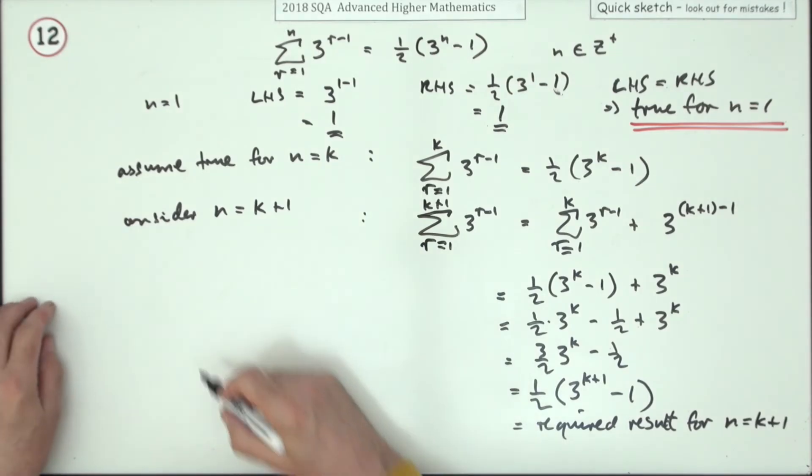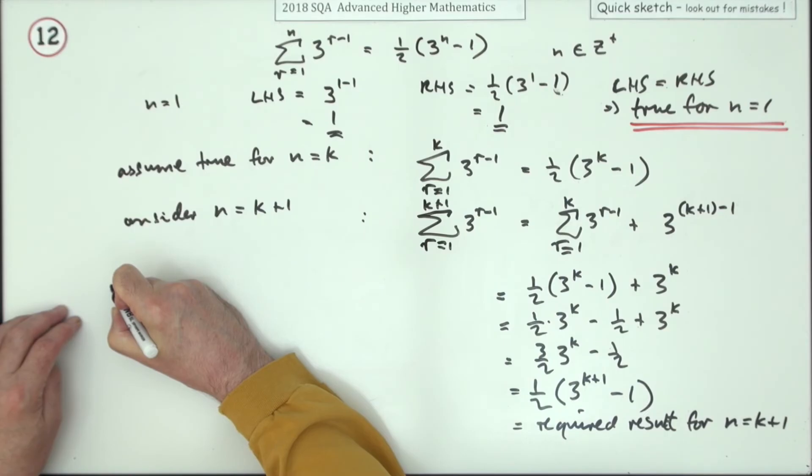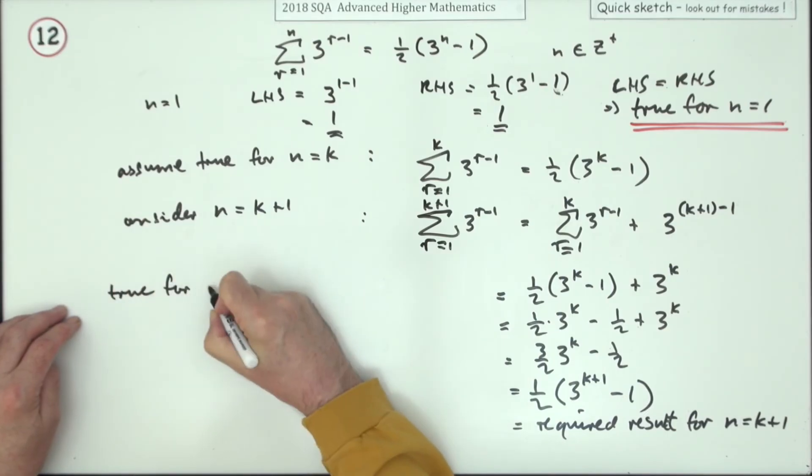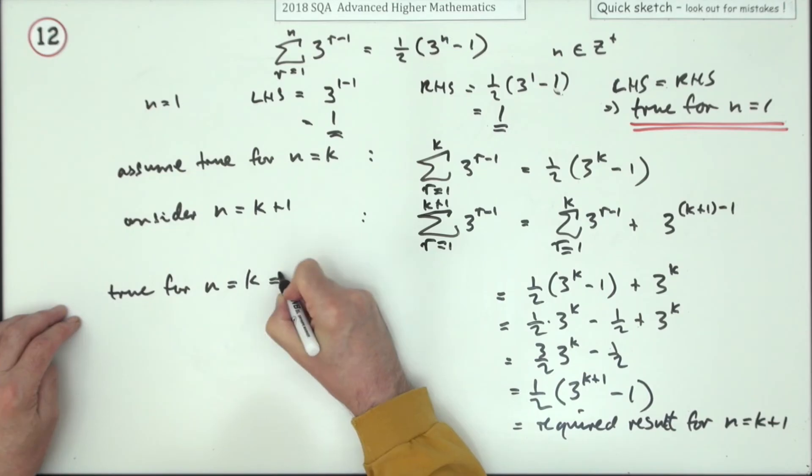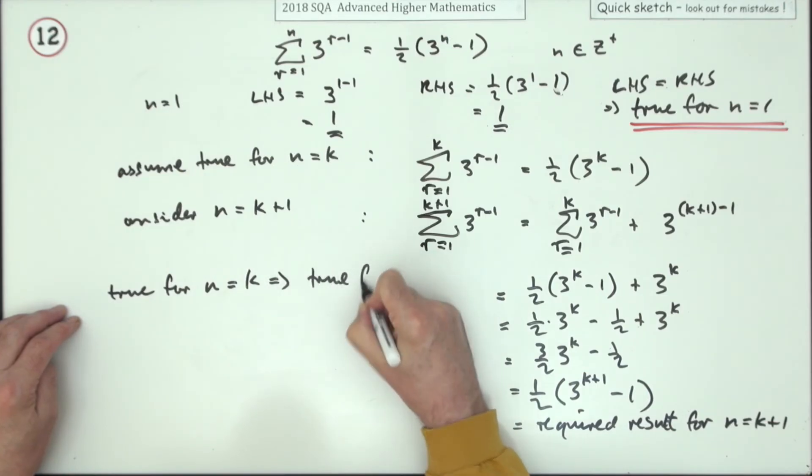Then you finish it off. Well, so here we've got this thing. If it was true for n equals k, that meant it was true for n equals k plus 1.